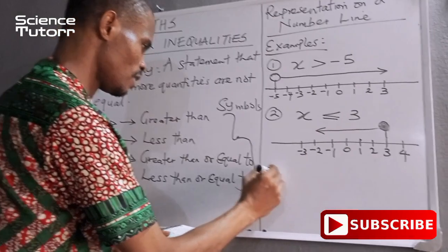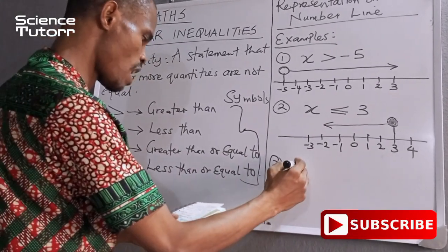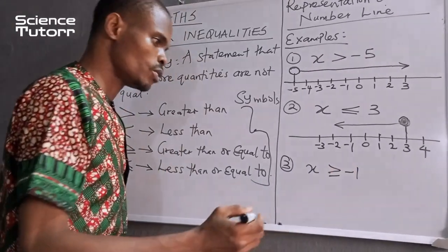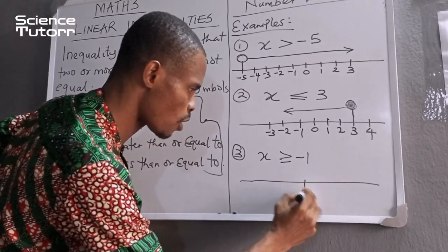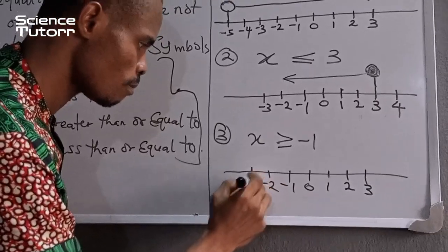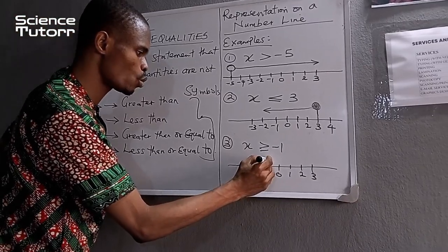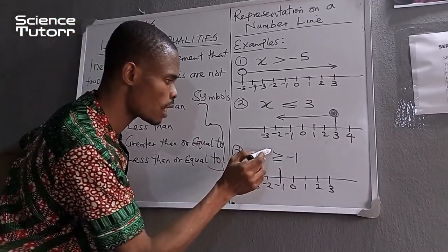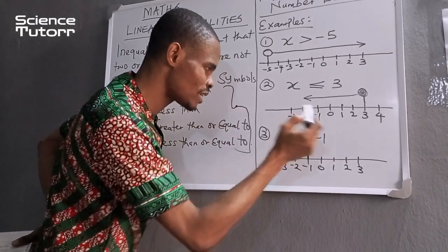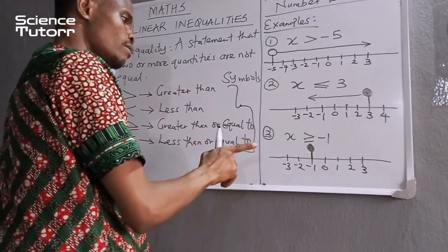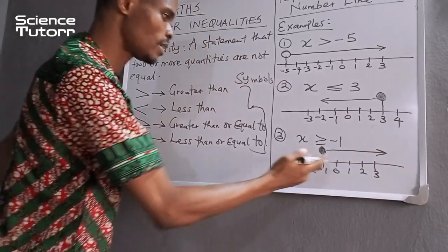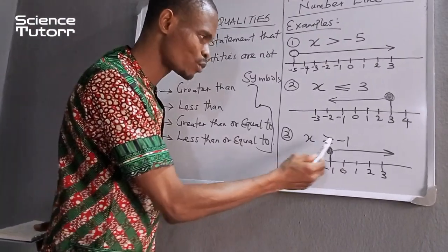Now a third example. We have x to be greater than or equal to minus 1. Let's draw our number line. We have our midpoint 0. Moving to the right: 1, 2, 3. On the left: minus 1, minus 2, minus 3. Our sole interest is minus 1. Greater than or equal to — that means I'm going to be using a dotted line. Since it is greater than or equal to minus 1, my arrow will be moving to the right hand side. This gives us the value for x greater than or equal to minus 1.